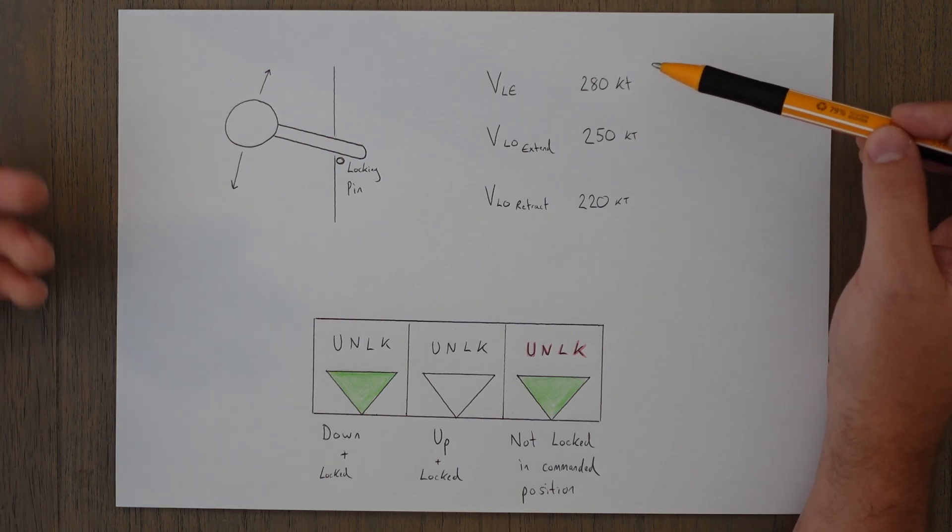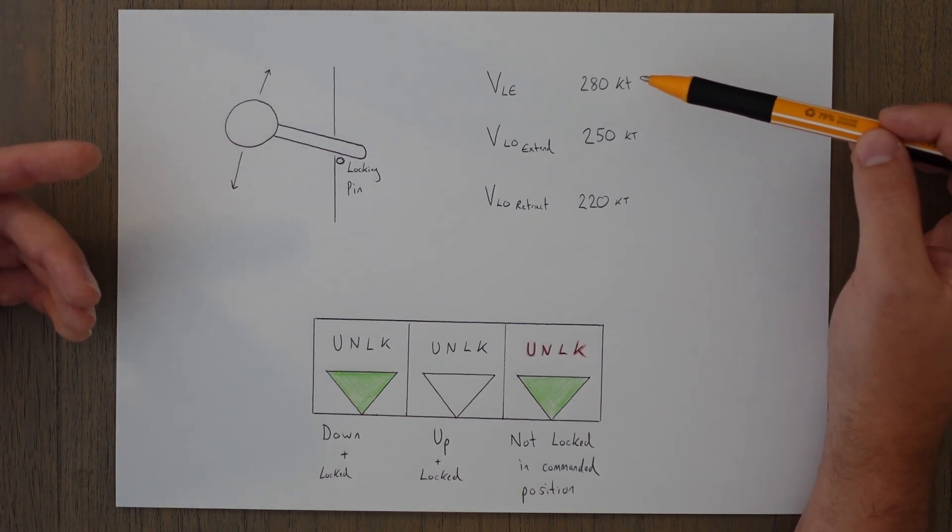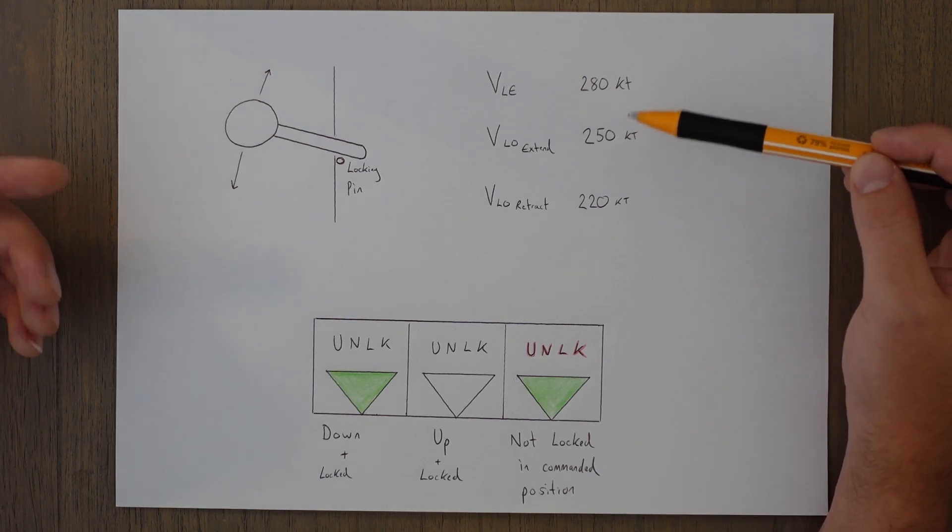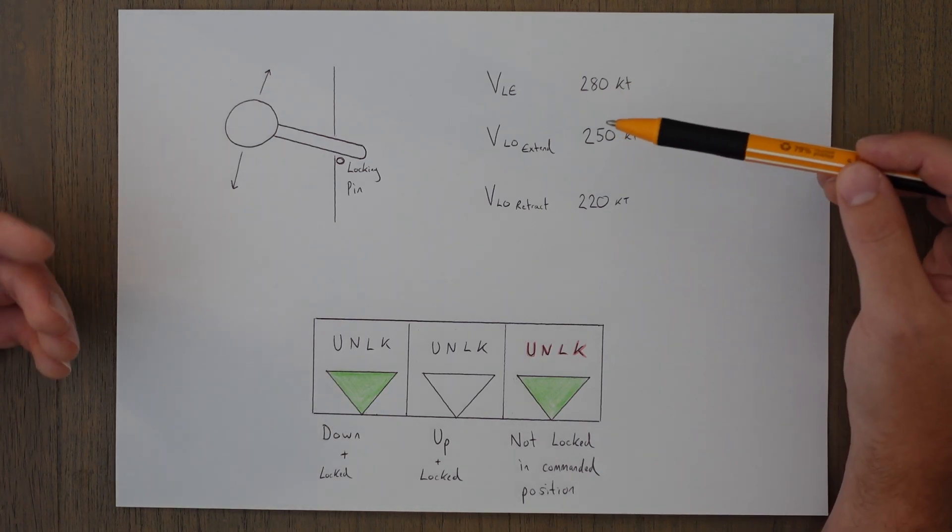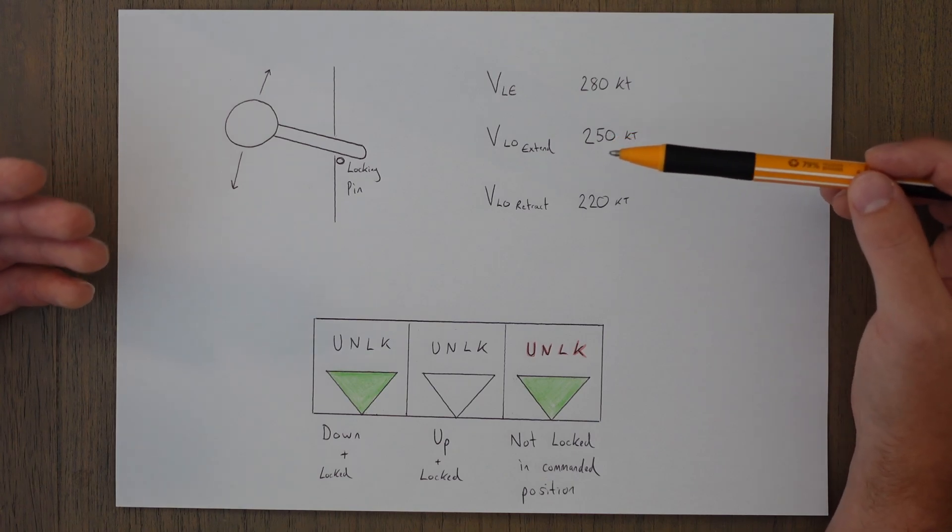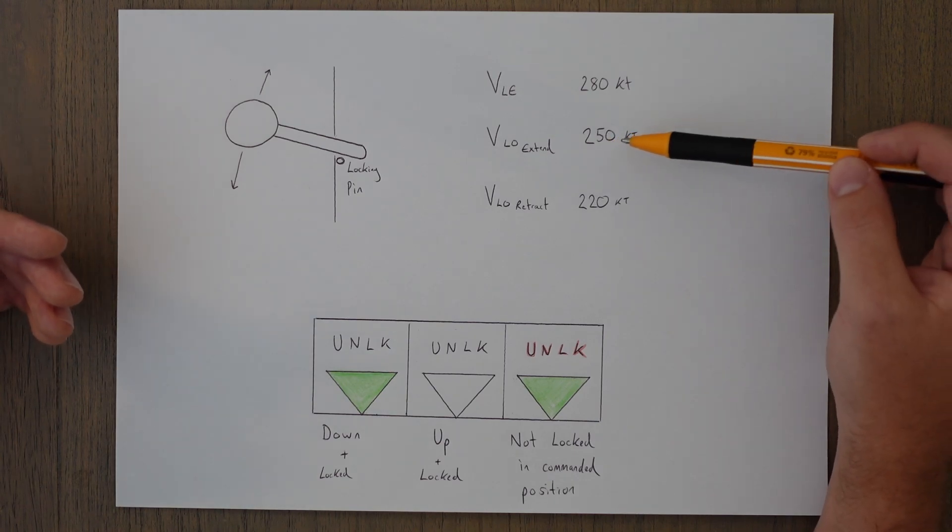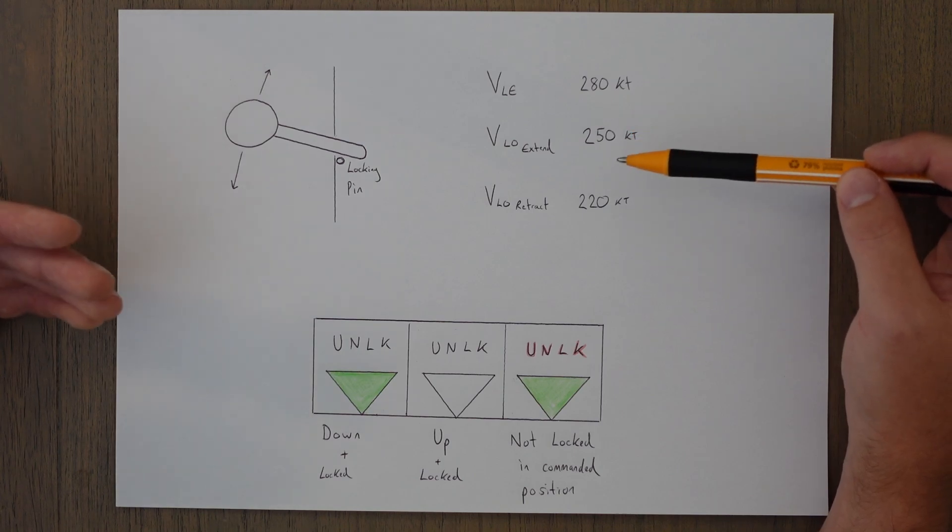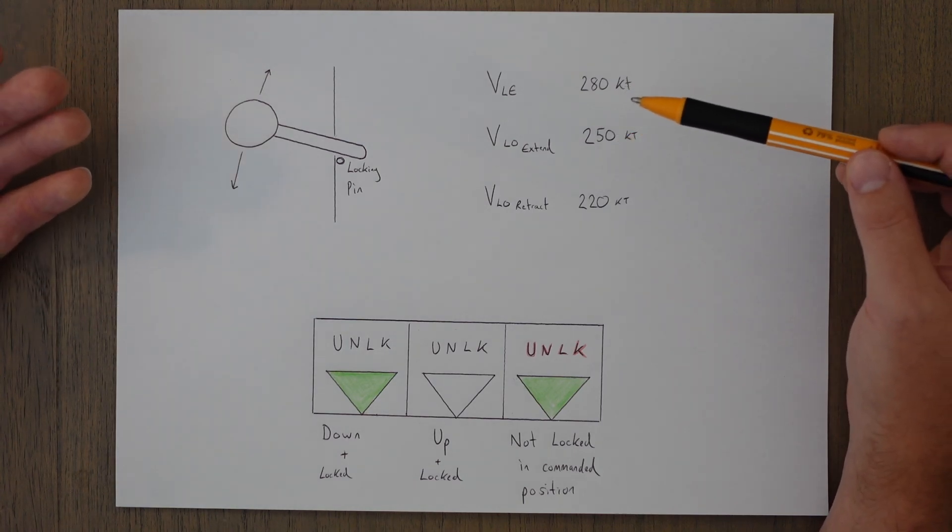VLE will generally be higher than VLO. So while we may be able to fly at 280 knots with the gear down coming into land, we wouldn't actually be able to drop the gear until we're below 250 knots because that's what the VLO means—we can't actually move the doors and the gear itself unless we're below 250 knots. But say, for instance, we were at 240 knots, we dropped the gear, we would then be able to speed up to 280 knots if we wanted to for some reason.